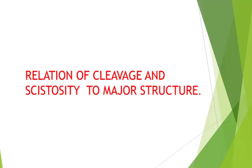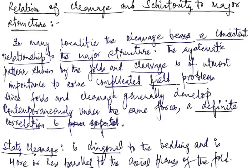Namaskar friends. Today we will be dealing about the relationship of cleavage and schistosity to major structures. Schistosity and cleavage are planes of weakness found in rocks. In many localities, this cleavage bears a consistent relationship to the major structure.